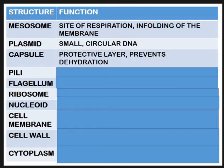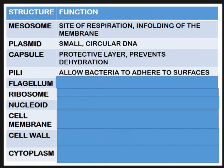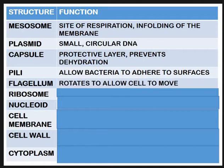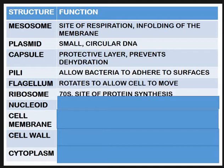Different bacteria have different numbers of plasmids. The capsule is the outermost protective layer - it prevents the bacteria from drying out and gives protection from the environment. Pili allow the bacteria to stick to surfaces and stick to each other. The flagellum rotates in a corkscrew action to allow the cell to move - bacterial cells that live in water will have those; cholera is your classic example. Ribosomes are the site of protein synthesis, exactly the same as in a eukaryotic cell, except instead of 80S they are 70S.